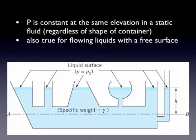So again, if you look at this figure, along that line AB, pressure is constant. So pressure is constant at the same elevation, regardless of what the shape of the object is above it. This is also true for flowing liquids with a free surface.